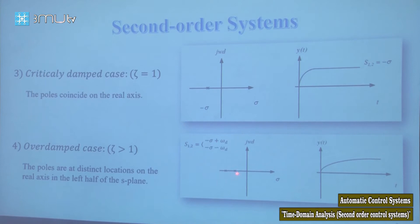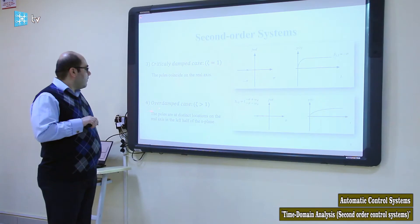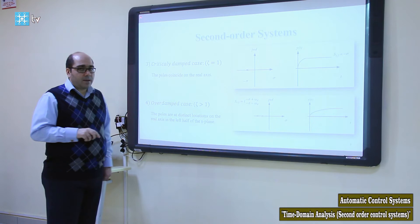The last case is the overdamped case, where the poles are at distinct locations on the real axis in the left half of the s-plane. The response will reach the final value after some transient time. In the overdamped case, zeta is greater than 1.